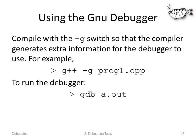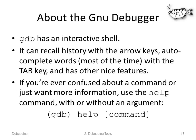To use the GNU Debugger, you'll need to compile with the -g switch, which makes the compiler generate extra information for the debugger to use. For example, use the command g++ -g prog1.cpp to compile prog1.cpp and produce a.out. To run the debugger, at the Unix prompt type gdb a.out and the debugger fires up. GDB has an interactive shell — it's text-driven, can recall history with the arrow keys, autocomplete words with the tab key, and has other nice features.